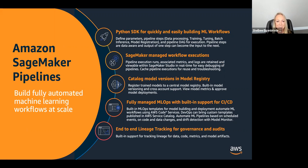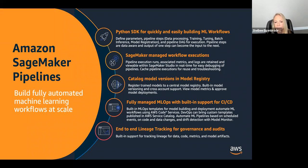End-to-end lineage tracking for governance and audits is really important, especially for large enterprises when you're managing a ton of models at scale or have corporate or regulatory requirements. Being able to have that end-to-end traceability is key, not only for governance and audit, but also for reliability. For example, someone accidentally deletes an endpoint — you should be able to recover from that if you have the CI/CD controlled pipelines in place.